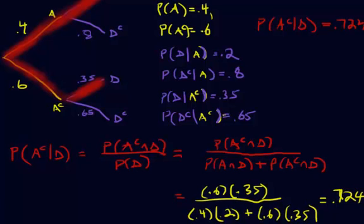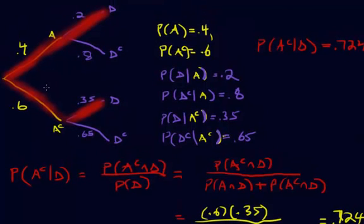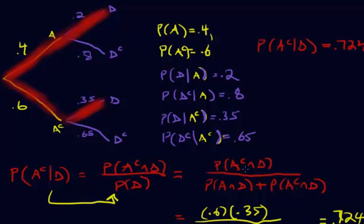So most times, if you can get your word problem into a tree diagram, you have a couple of different ways of solving it. If you recognize it as a Bayes' theorem problem, go right ahead and use Bayes' theorem. If you start with the conditional probability formula and work through the complements, that can also work. There's how you would use Bayes' theorem with a tree diagram — in the next videos we'll do Bayes' theorem with some word problems.